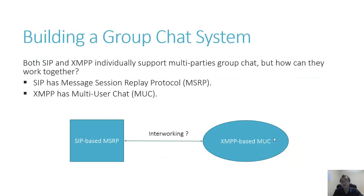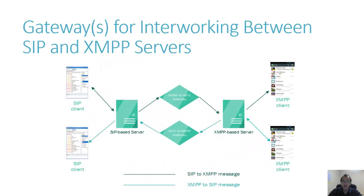In the context of building a group chat application, both SIP and XMPP have extensions for this purpose. SIP has the Message Session Relay Protocol (MSRP), while XMPP has the Multi-User Chat (MUC) extension to handle group chat. The question is whether we can make them work together, and people came up with the idea of building a gateway for interworking between them.